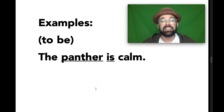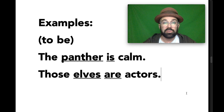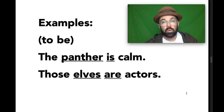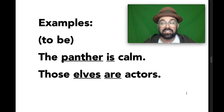Another example: 'Those elves are actors.' Once again, we're using the verb to be, this time with a plural subject in the present tense, so we have the verb 'are.' Elves is the simple subject. We have a word in the predicate — after the verb — that is linked to the subject. In this instance, it's not an adjective; it's another noun. Actors is the same thing as elves in this sentence, and those two nouns are linked by the verb 'are.'